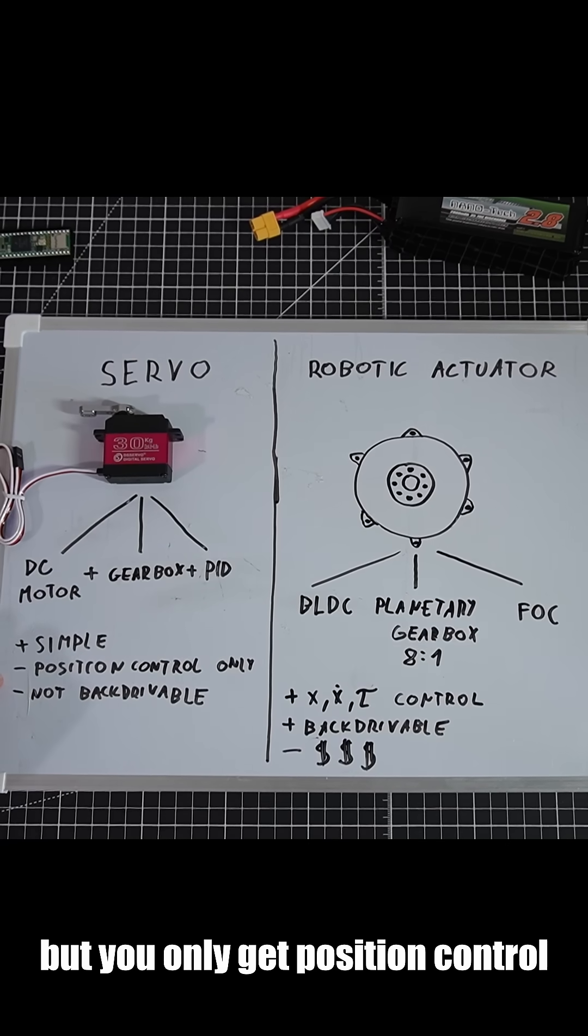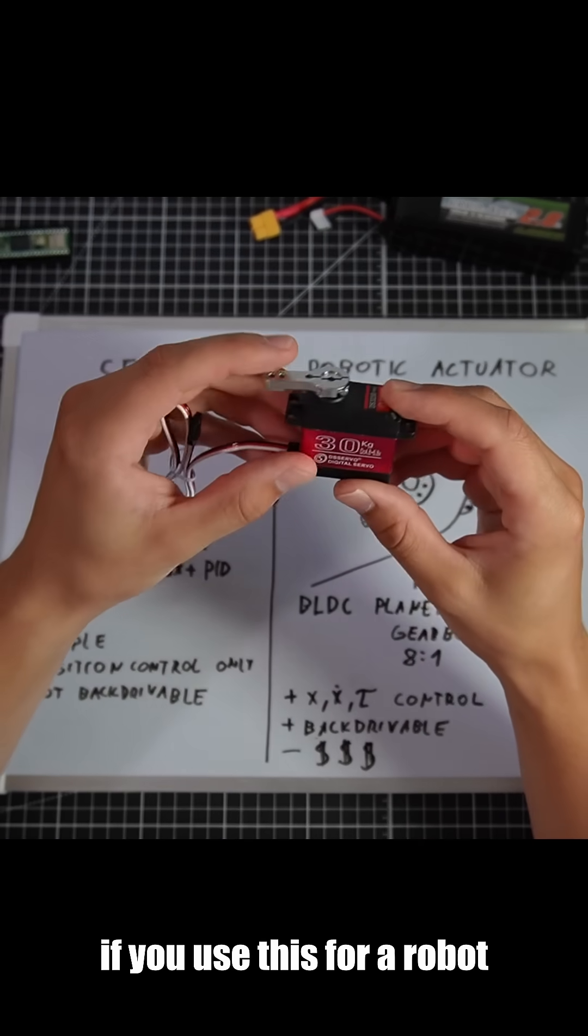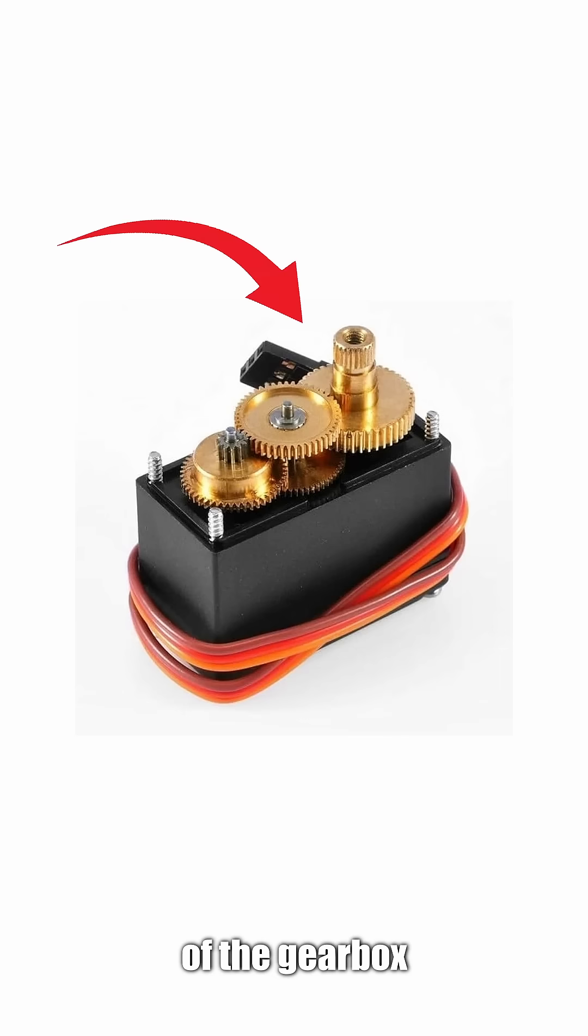It's simple, but you only get position control and it's not back drivable. If you use this for a jumping robot and you smash the robot into the ground, it's gonna break the teeth of the gearbox.